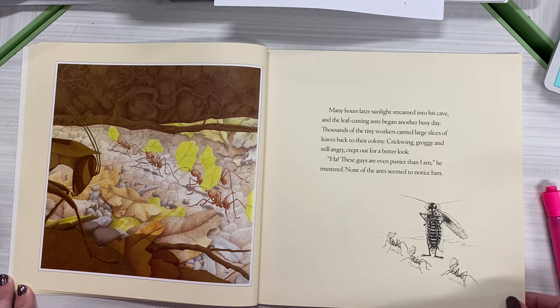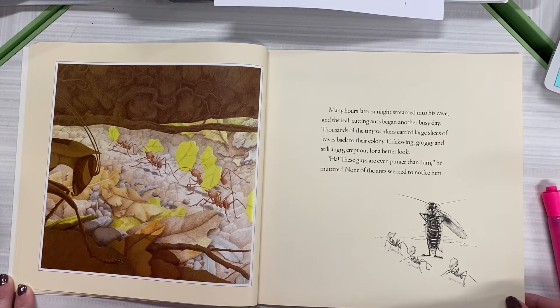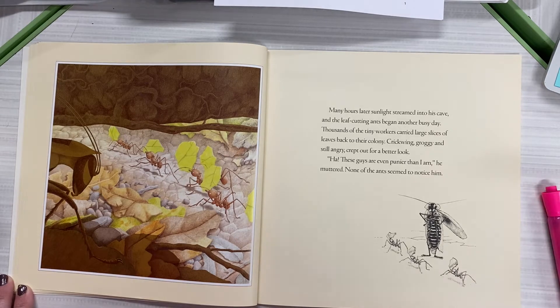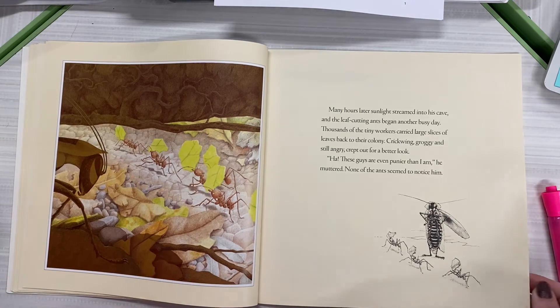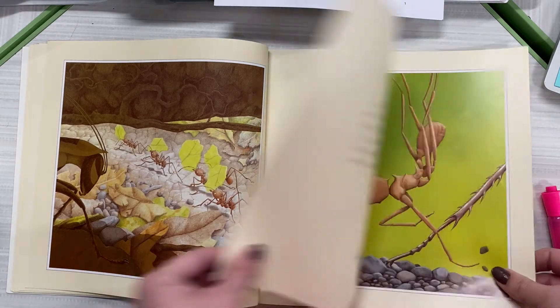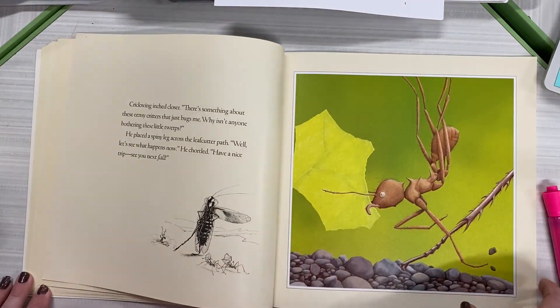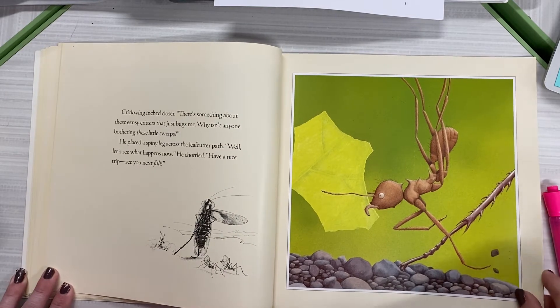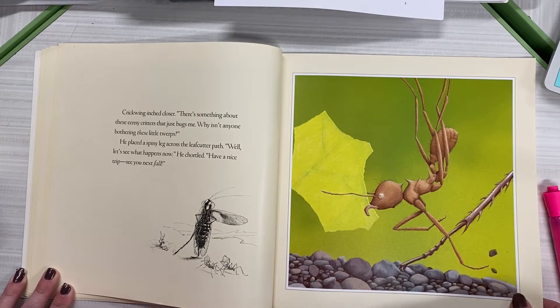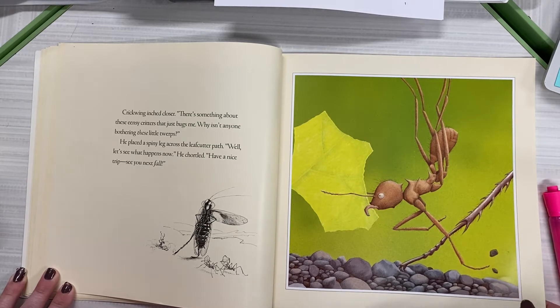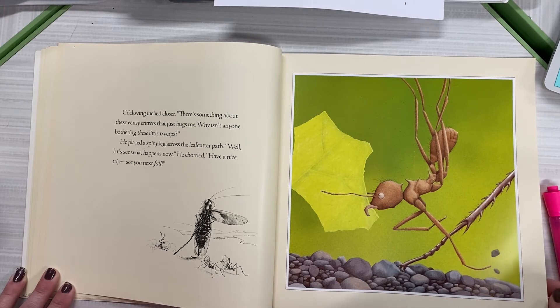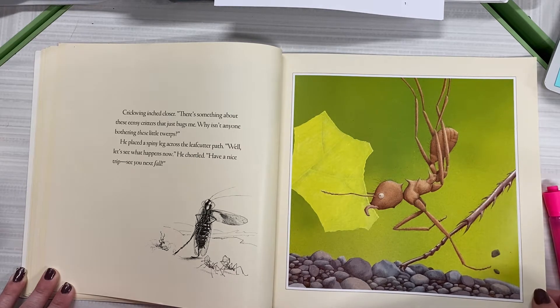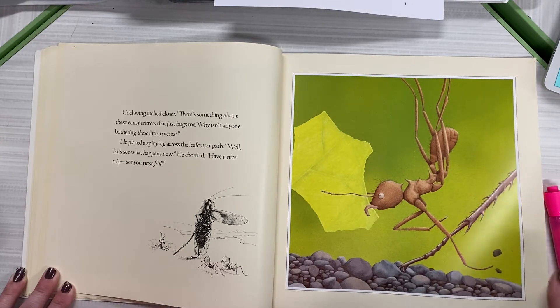Many hours later, sunlight streamed into his cave and the leaf cutting ants began another busy day. Thousands of the tiny workers carried large slices of leaves back to their colony. Crickwing, groggy and still angry, crept out for a better look. These guys are even punier than I am, he muttered. None of the ants seemed to notice him. Crickwing inched closer. There's something about these antsy critters that just bugs me. Why isn't anyone bothering these little twerps? He placed a spiny leg across the leaf cutter path. Well, let's see what happens now, he chortled. Have a nice trip. See you next fall.